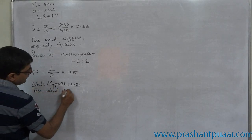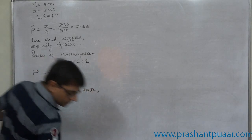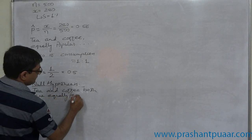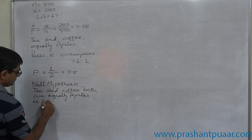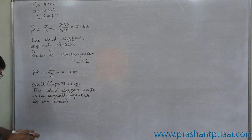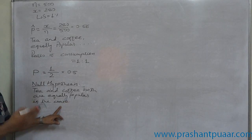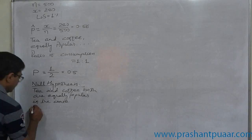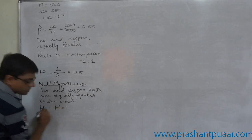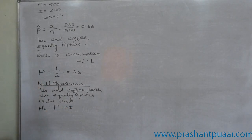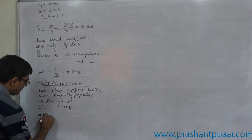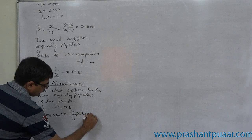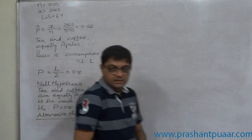The null hypothesis H0: tea and coffee both are equally popular in the state — or equivalently, the proportion of users is equal, or there is no significant difference in popularity of tea and coffee in the state. So H0: capital P = 0.5.